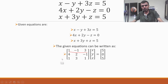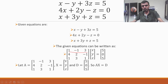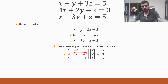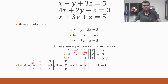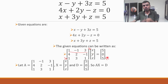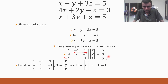Take the first matrix as A, the variable matrix as X, and the constant matrix as D. So my equation would be A into X equal to D. I hope it makes sense up till now.